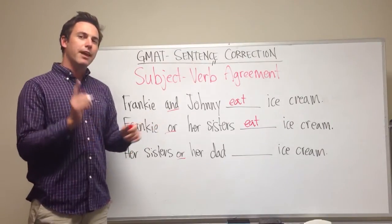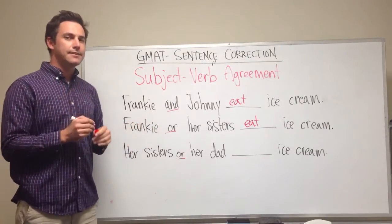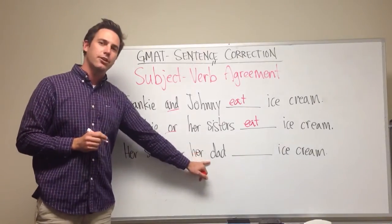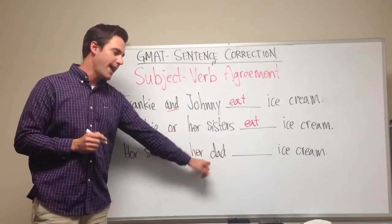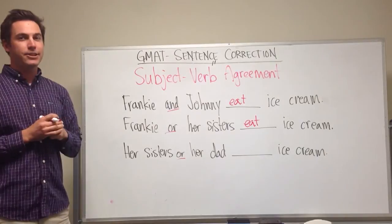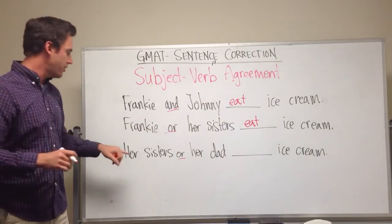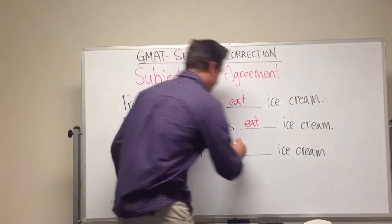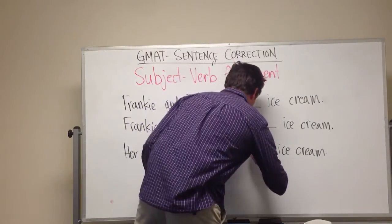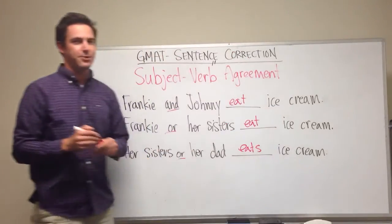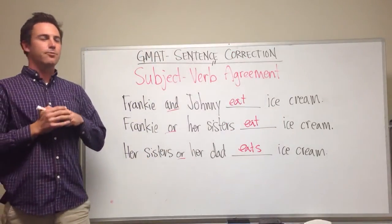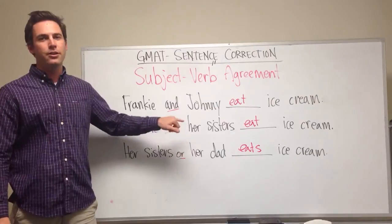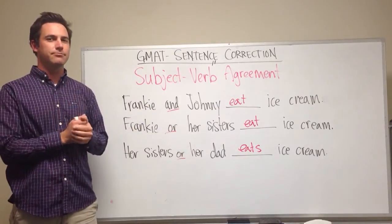Finally, if the last subject in the list is singular — like here, it says her dad — we're going to have a singular verb. So: her sisters or her dad eats ice cream. So remember, on the test, if you see an OR or a NOR, consider this rule.